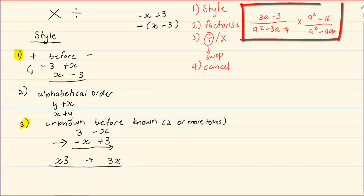Okay, let us take the following example. Now when we're doing division, look at our style. We've got unknowns before knowns. We've got a trinomial. We've got a difference of two squares and we've got unknowns before known. So for the first one, we don't need to worry. The style is sorted out.